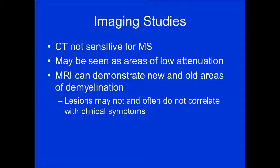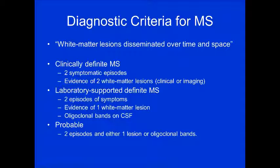CT is not sensitive for MS, though you may see areas of low attenuation. MRI can show new or old areas of demyelination, but lesions may or may not correlate with clinical symptoms — something to discuss with the ordering neurologist or physician. The diagnostic criteria for MS: white matter lesions disseminated over time and space. Clinically definite MS requires two symptomatic episodes and evidence of two white matter lesions on imaging in the characteristic locations.